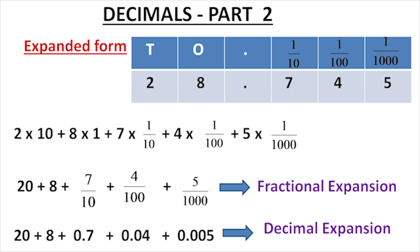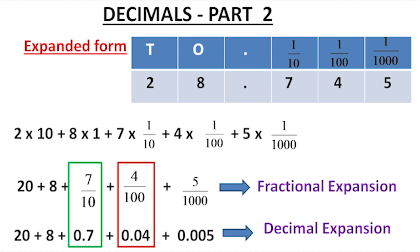In the fractional expansion, the numbers are in fractional form. In the decimal expansion, they are in decimal form. For example, 7/10 = 0.7, 4/100 = 0.04, and 5/1000 = 0.005.